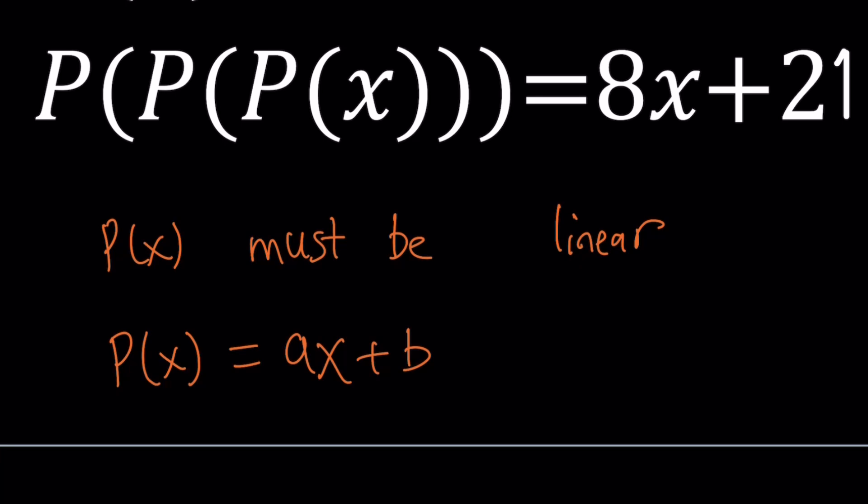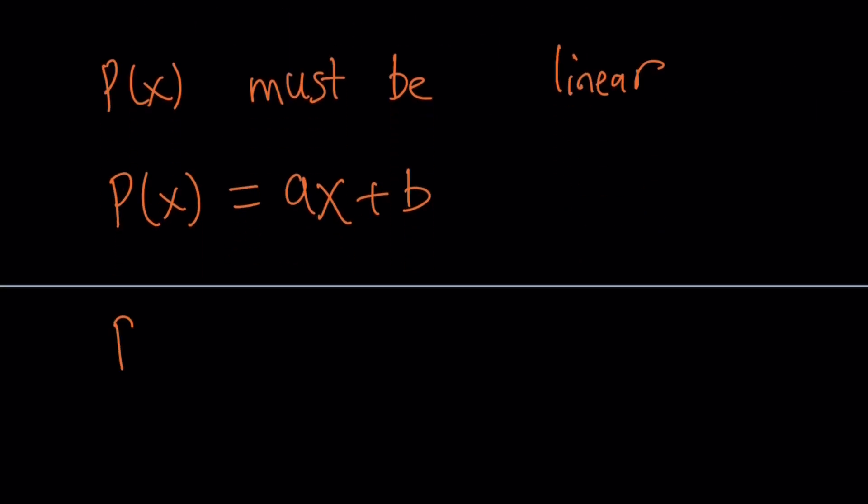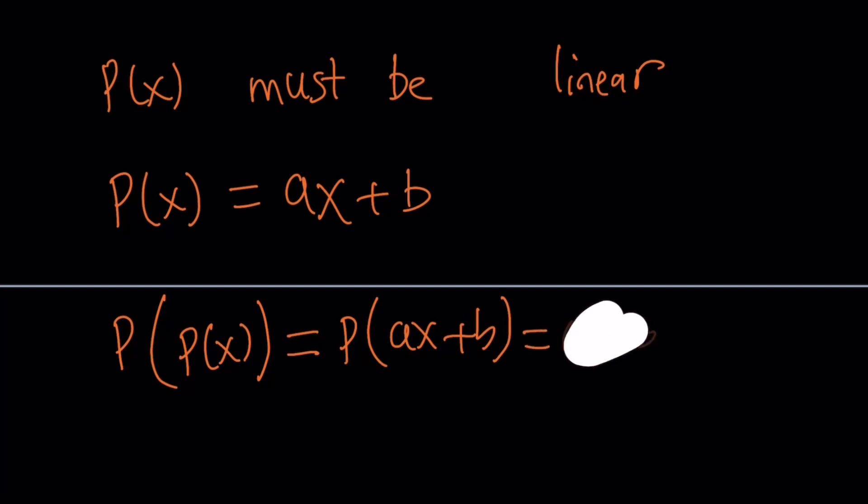So let's go ahead and evaluate p of p of p of x. What is p of p of x? Let's evaluate it first because then we can go ahead and plug it into p again. P of p of x means p of ax plus b, but p takes the argument ax plus b and then multiplies by a. So it's going to be a times ax plus b plus b. And you can evaluate this as a squared x plus ab plus b. That's p of p of x.